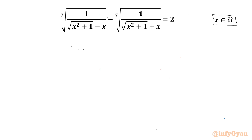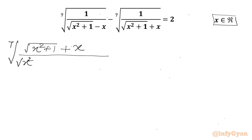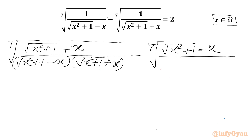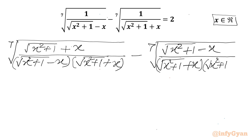I will rationalize our denominator. So I will write the 7th root of the denominator's conjugate. I will write square root of (x² + 1) plus x over the denominator square root of (x² + 1) minus x, and then our numerator is square root of (x² + 1) plus x. Similarly for the second term I will write minus 7th root of the denominator's conjugate, so it will be square root of (x² + 1) minus x over square root of (x² + 1) plus x, times square root of (x² + 1) minus x.